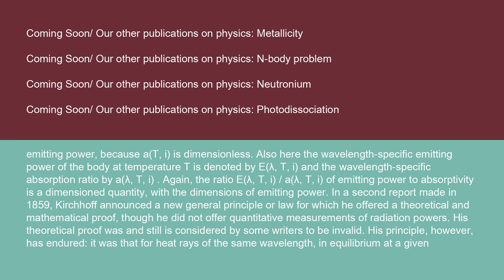Also, the wavelength-specific emitting power of the body at temperature T is denoted by E(λ,T,i) and the wavelength-specific absorption ratio by A(λ,T,i). Again, the ratio E(λ,T,i)/A(λ,T,i) of emitting power to absorptivity is a dimensional quantity. In a second report made in 1859, Kirchhoff announced a new general principle or law for which he offered a theoretical and mathematical proof, though he did not offer quantitative measurements of radiation powers. His theoretical proof was and still is considered by some writers to be invalid. His principle, however, has endured.